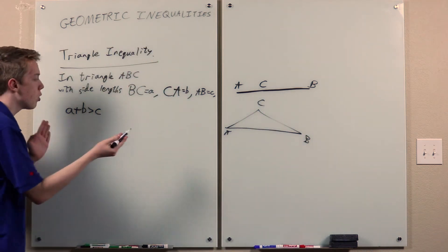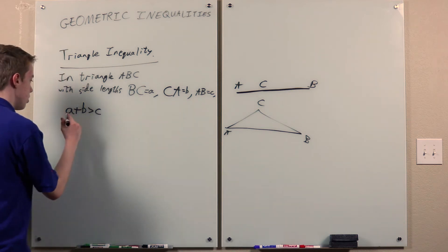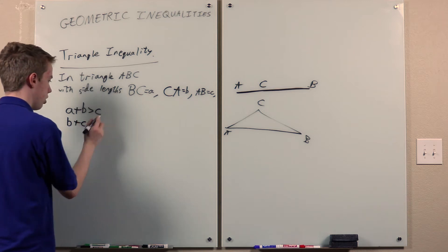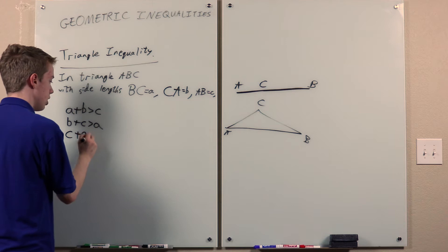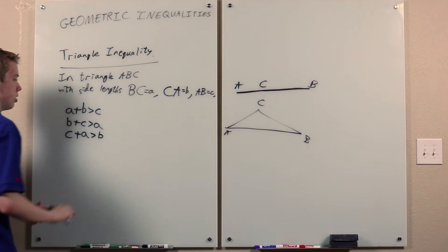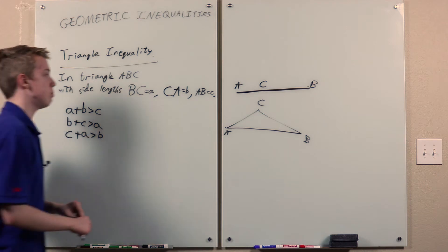Which basically says the shortest distance between two points is the line segment. And symmetric permutations of this also hold, so we also have a + b > c, b + c > a, c + a > b.